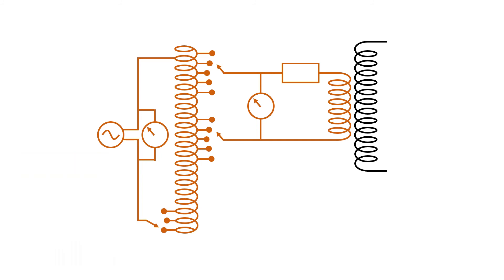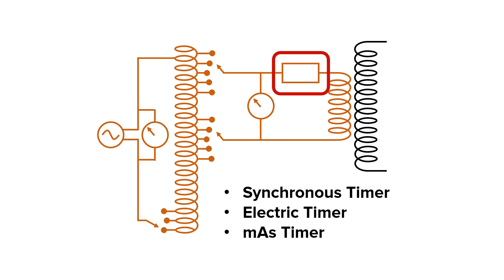The last area of the primary circuit is the timing circuit. The timing circuit controls how long the exposure stays on. Our exposures are typically in the milliseconds of length. There's no way you could precisely hold down the exposure switch for 0.2 milliseconds. So this timing circuit cuts off exposure at the precise time. There are four types of timing circuits. The first is a synchronous timer. The second is an electronic timer, which is the most common in our machines. The third is a mass timer, which terminates when a desired mass is achieved. And finally, there's the automatic exposure control, which measures the quantity of radiation that reaches the image receptor.